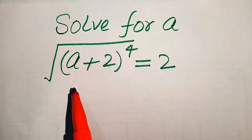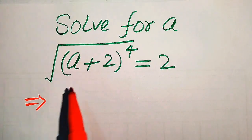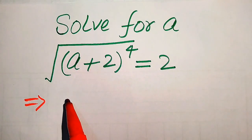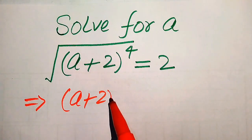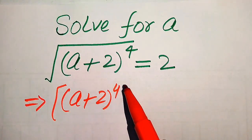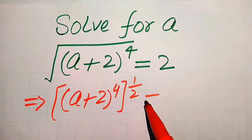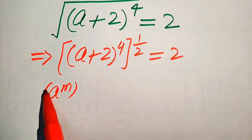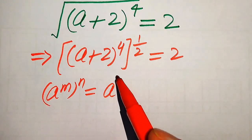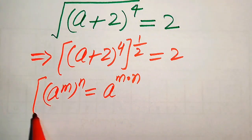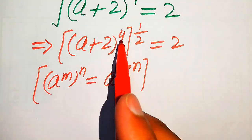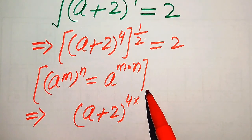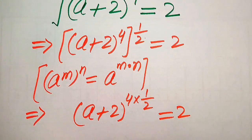The very first thing we are going to do is write this equation into exponential form, so that it will be written as (a+2) to the power of 4, and its whole power is 1 over 2, equals 2. Now we use the exponential law: if we have a to the power of m, to the power of n, it equals a to the power of m multiplied by n.